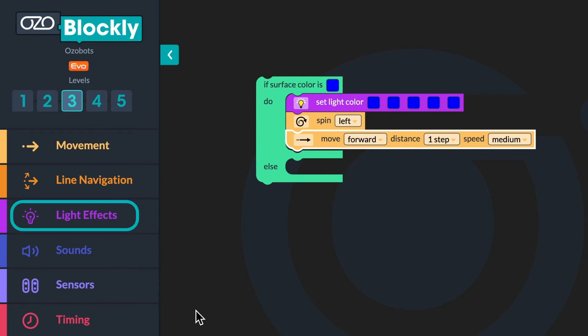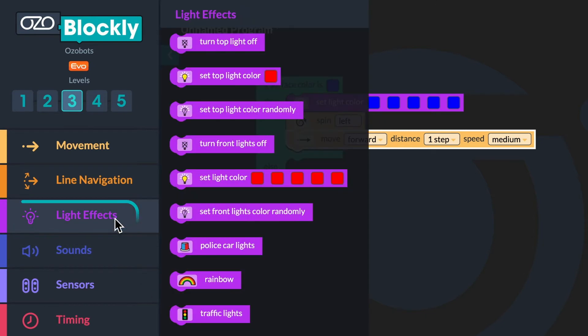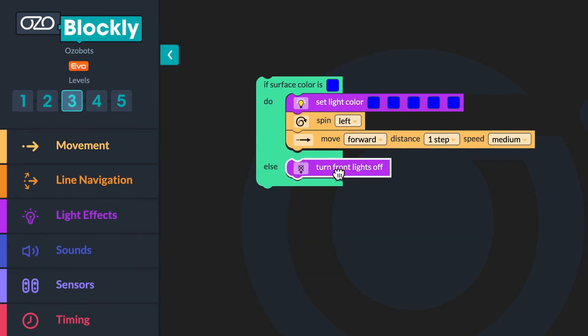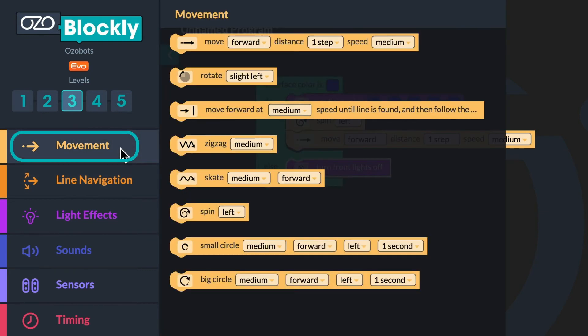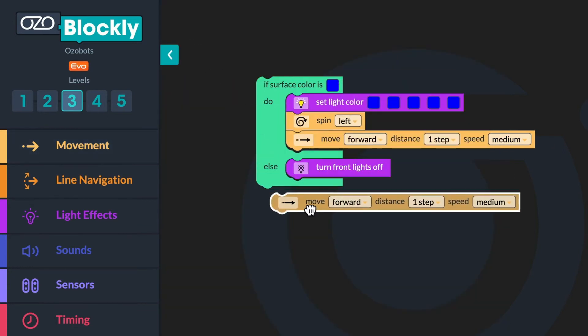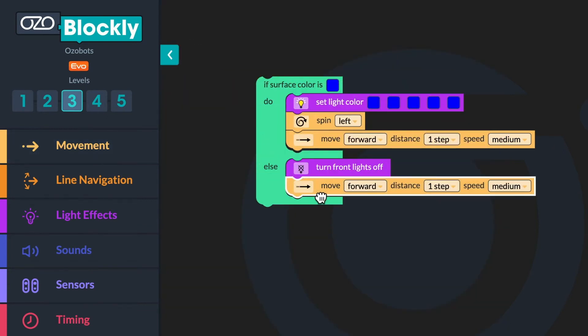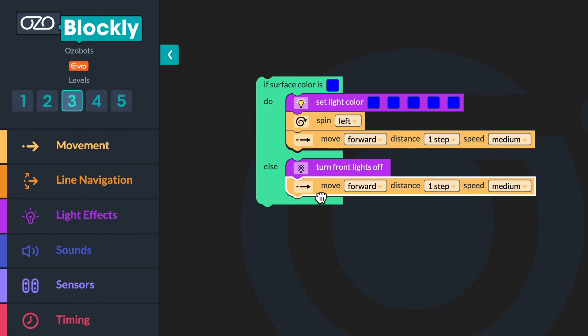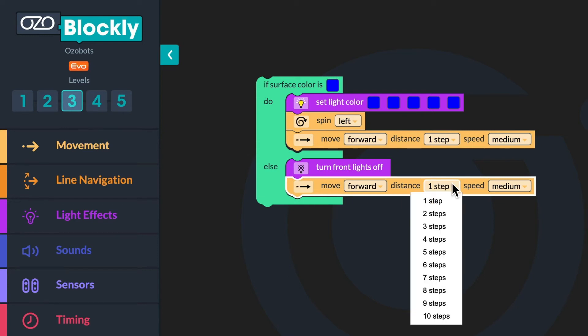Go to light effects in the block panel. Click and drag a turn front lights off block into the conditional after the word else. Next go to movement. Click and drag a move forward distance one step medium block below the turn front lights off block. Then click the drop down menu and change the number of steps from one to two.